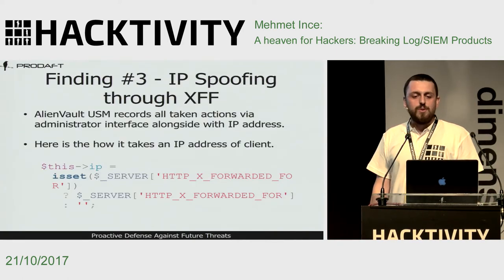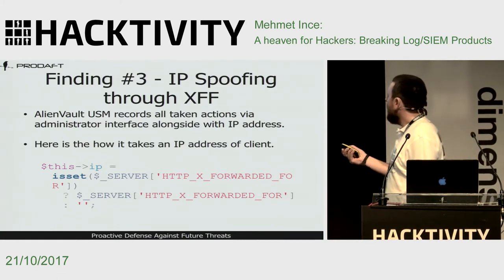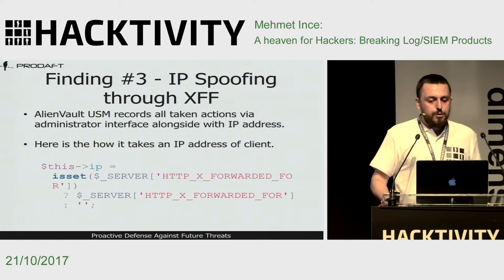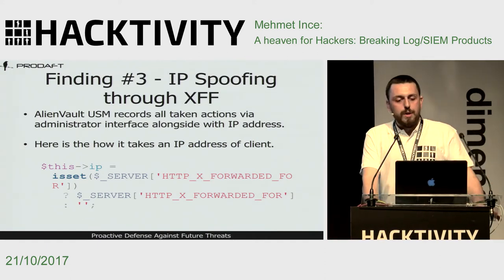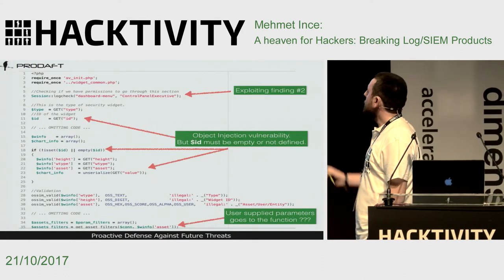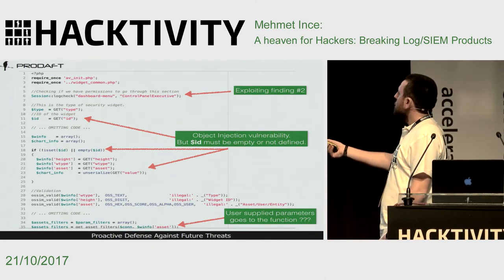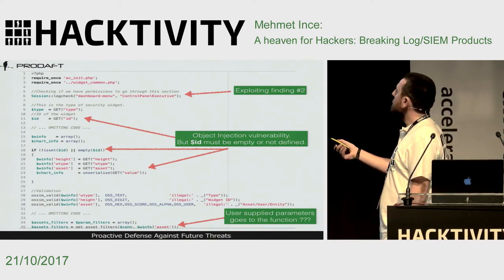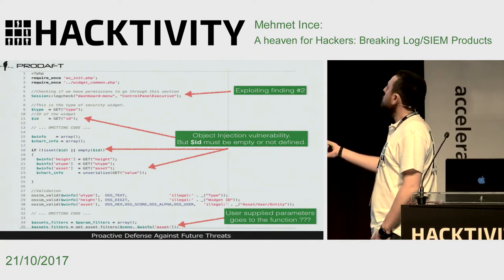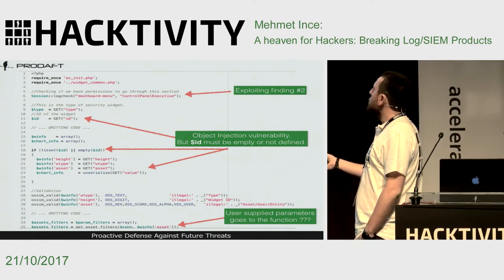Our third finding was related to the client IP address. It looks at the HTTP request headers — if it sees the X-Forwarded-For header, it just takes that value as the IP address. Because AlienVault USM records all administrator actions through the interface. Now let's go into the details. This is where we detected the unserialize function code — we have lots of user-supplied variables, type IDs, and more user-supplied parameters with validation over data taken from the user.